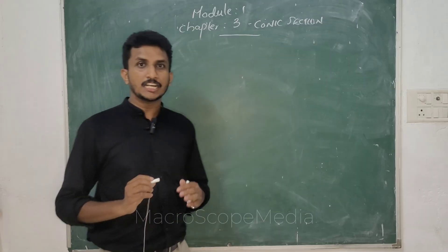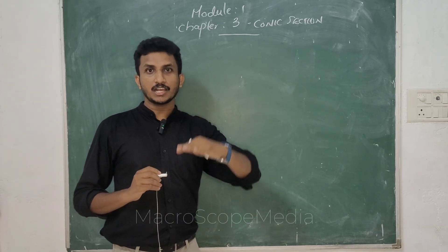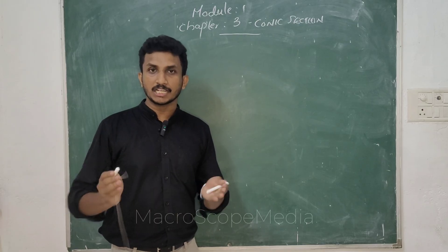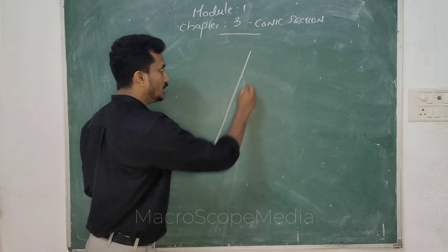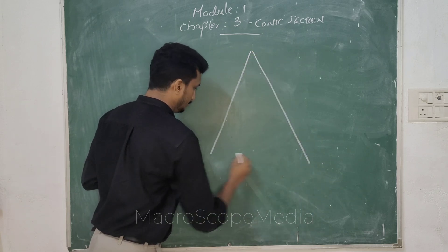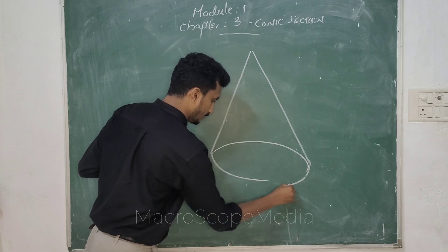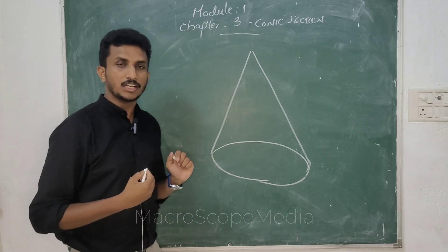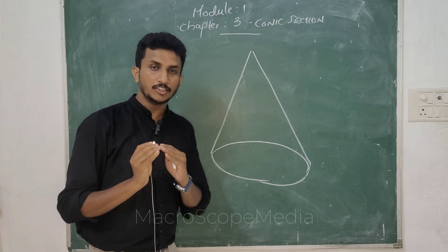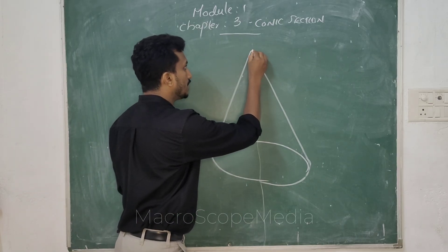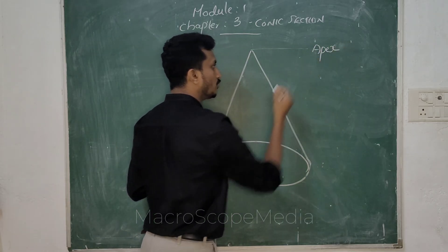What is the conic section? One section of the cone is the section of the cone. This is the Apex of the Cone.